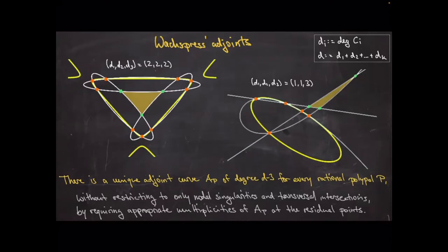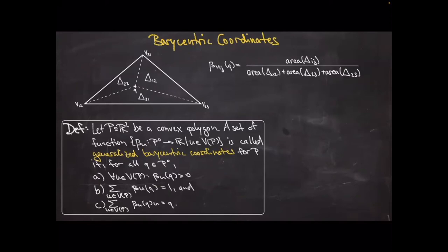Now before diving into the physics world, let me remind everyone what barycentric coordinates are. Here is a triangle, and the barycentric coordinates of a point in the middle are computed by subdividing the triangle into three sub-triangles. Each coordinate corresponds to one vertex and is just the relative area of the corresponding sub-triangle. In geometric modeling there's a definition of how barycentric coordinates should look on more complicated objects like polytopes or polypoles.